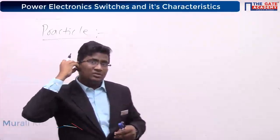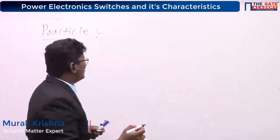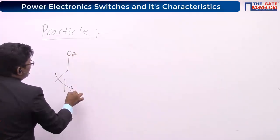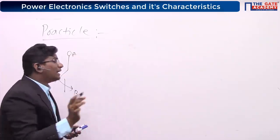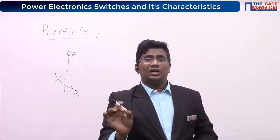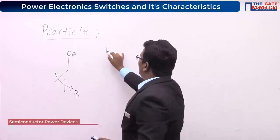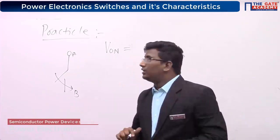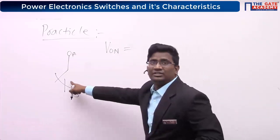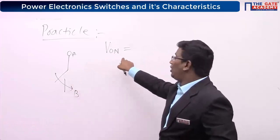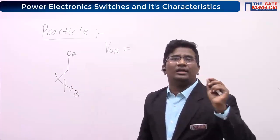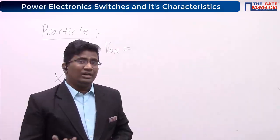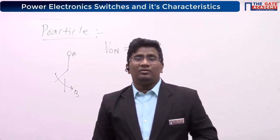Now look at this practical switch. This is A and this is B. Tell me, for a practical switch, if I close a particular switch, what is the on-state voltage? Will it be zero or not equal to zero? If I close this switch, is the on-state voltage equal to zero or not equal to zero? Why is it not equal to zero?